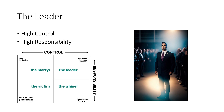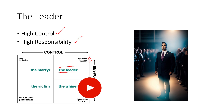Starting with the leader: someone who has high control and high responsibility falls in this quadrant. He is someone who is consistent, generous, and powerful. This is the ideal combination — where you and I as project managers should aim to be. We should be in control, we should have the authority, and at the same time, we should also take responsibility when things go wrong with our project.